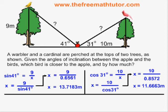I know the distance between each bird and the apple, but the question is asking which bird is closer to the apple and by how much. So that means I have to subtract 11.6663 from 13.7183 and get the difference in the distances, which is 2.0519 meters.